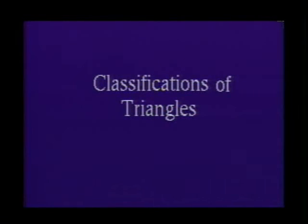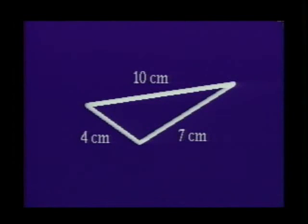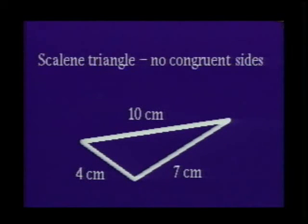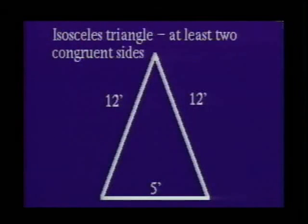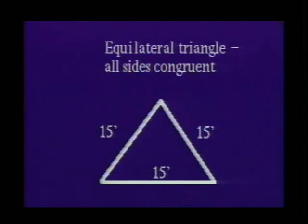Classifications of triangles. Triangles are classified in two ways: by the relative measures of their sides and by the measures of their angles. If a triangle has no congruent sides, it is called a scalene triangle. If it has at least two congruent sides, it is called an isosceles triangle. If all three sides are congruent, it is called an equilateral triangle.